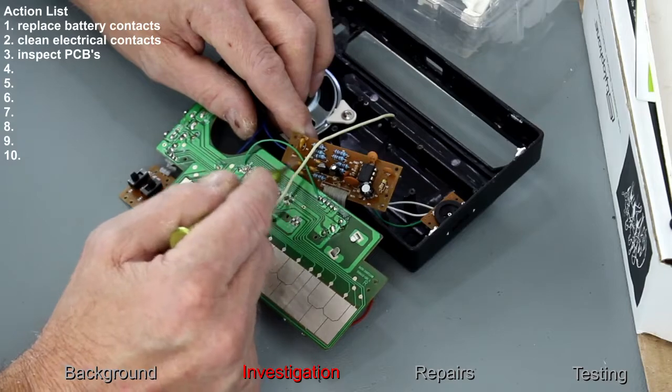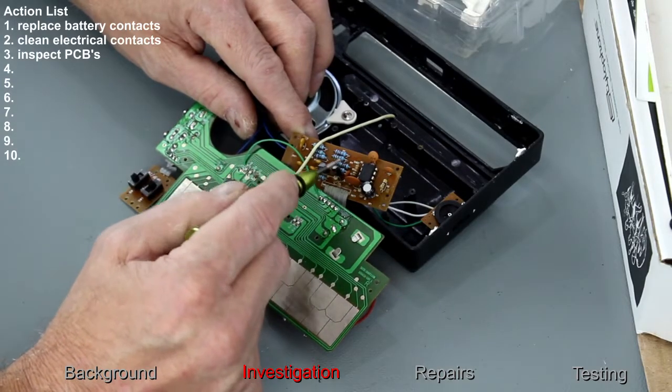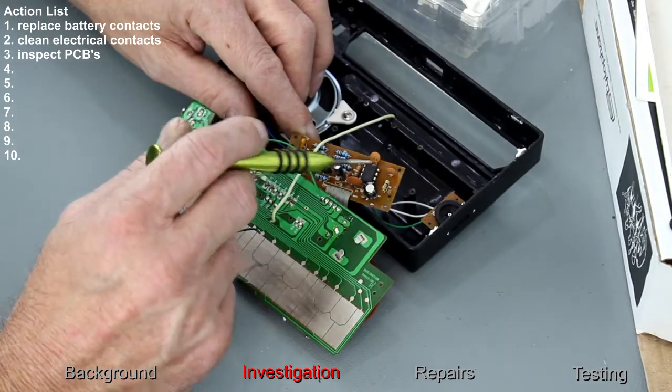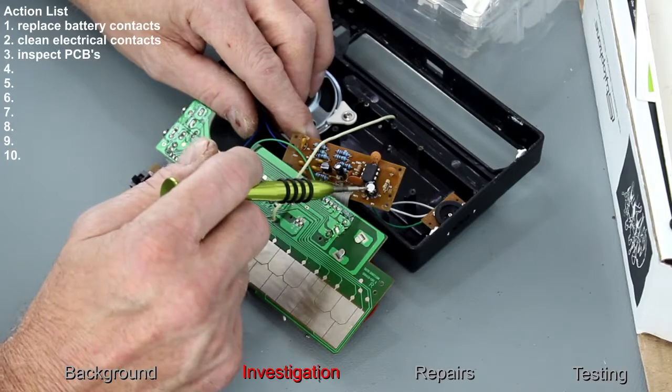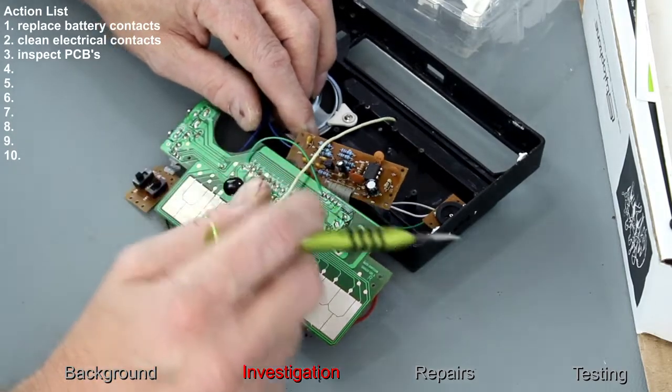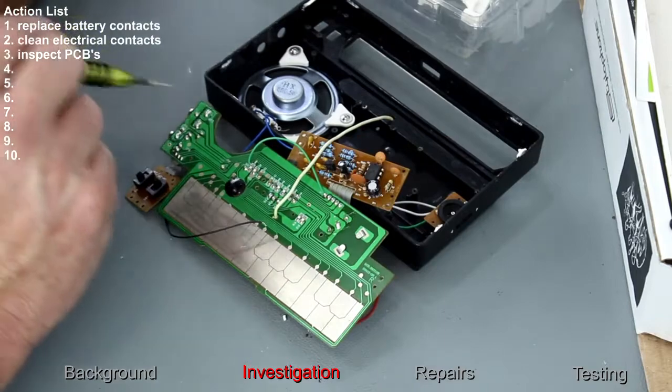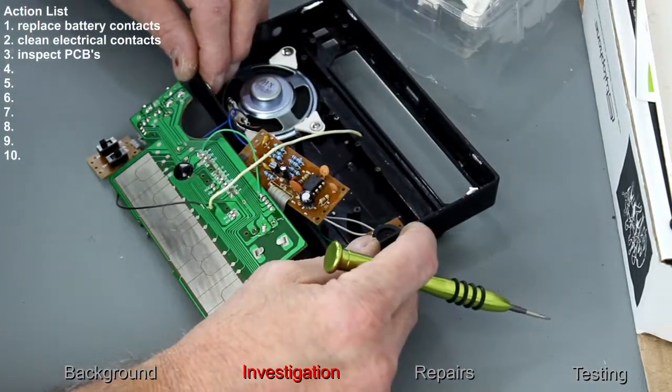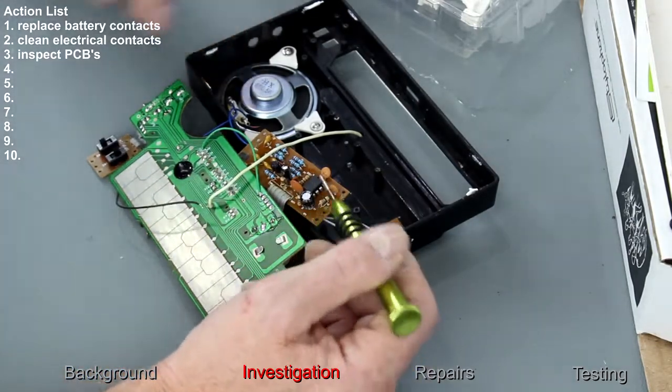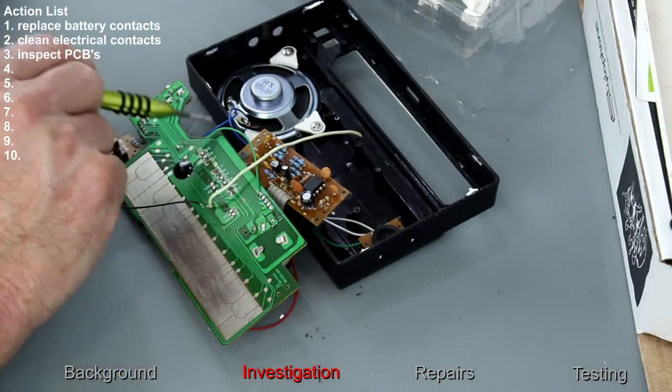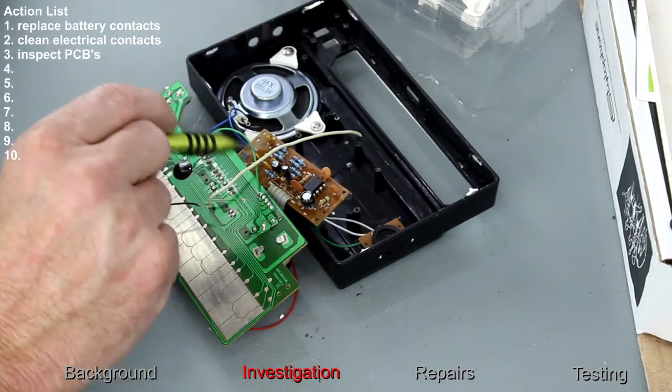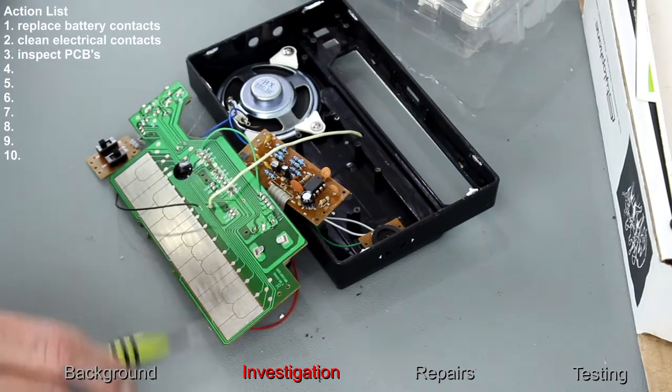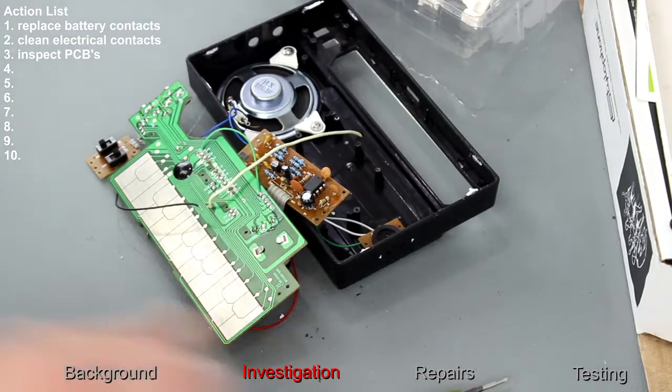We've got a transistor there, some ceramic capacitors, resistors. As we just discovered, the LM386 power amplifier chip and an electrolytic capacitor there. That is just a potentiometer on here to adjust the bias obviously on that chip to set the power level going off to the speaker. What I'm going to do is give this a clean, electrically clean up this keypad and the other bit, and then reassemble it.